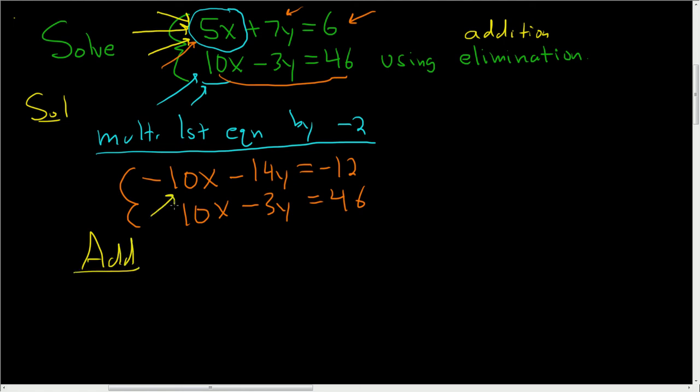So negative 10x plus 10x is 0. That was the whole point. Negative 14y and negative 3y. When we add those, we get negative 17y. And here, negative 12 plus 46. Oh, look, this is 34. That's great.